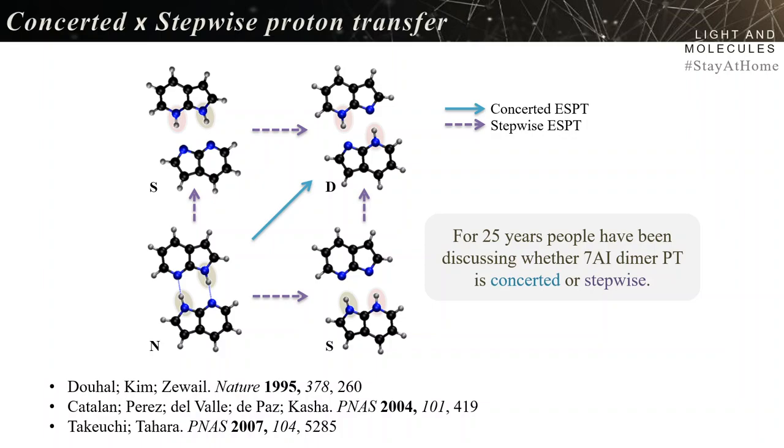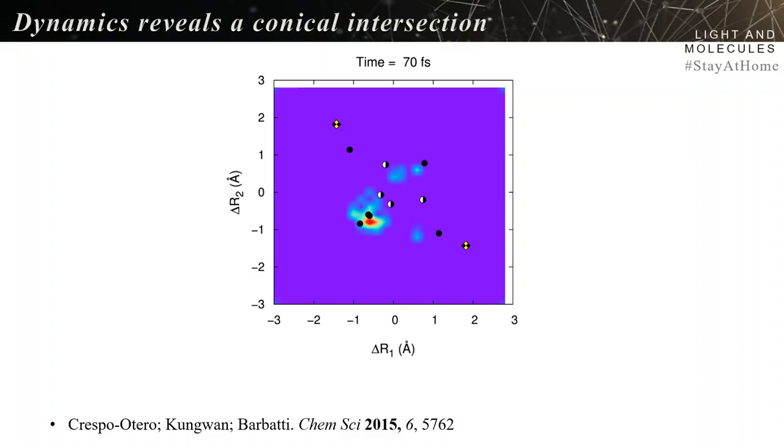When we brought this problem, I didn't even want to touch it. What could we contribute after tens of papers? But he insisted and it was a good idea. We did simple surface hopping dynamics to see what happens. Diagonal is concerted, if you go through the borders you have stepwise. We saw kind of both - some concerted dynamics with both protons moving together, and some initiation of stepwise. But for our surprise, it never completes.